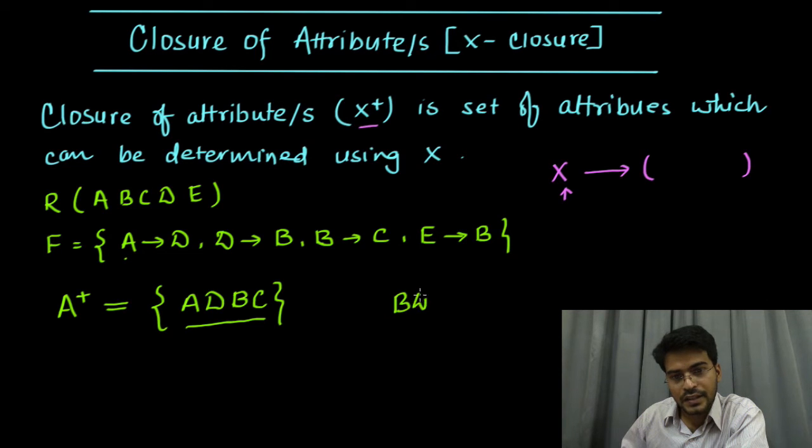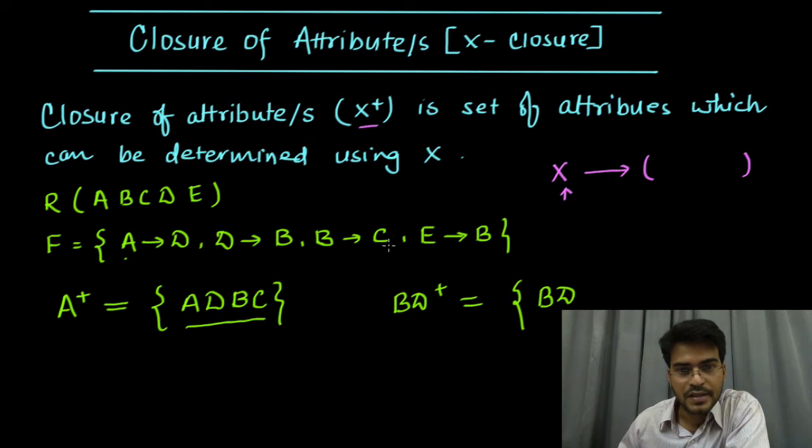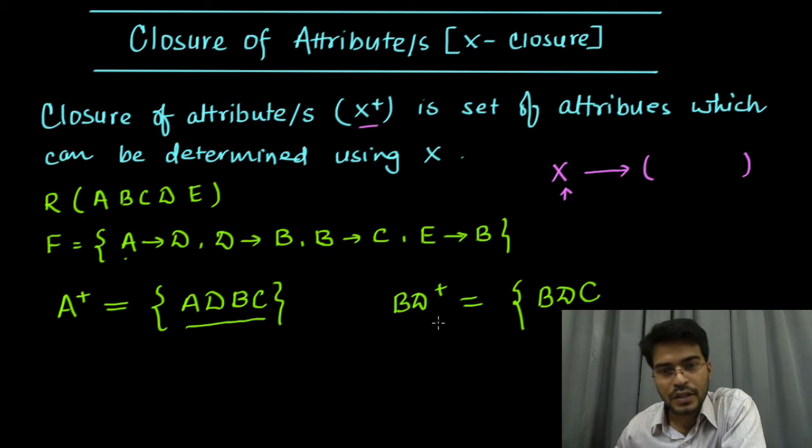So BD plus equals, of course, B and D. Now B can determine C, so we will have C. And D can determine B, but B is already there here. So that's all. For BD, closure will be B, D, and C.